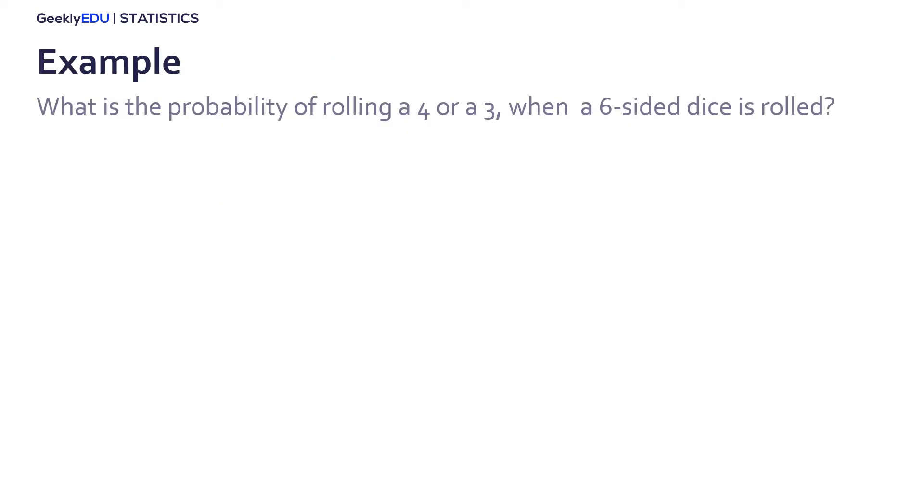Let's see an example. Using the addition rule, what is the probability of rolling a 4 or a 3 when a dice is rolled? There is only one face of the dice with the number 3. That is why the probability is 1 sixth, and the same happens with 4.